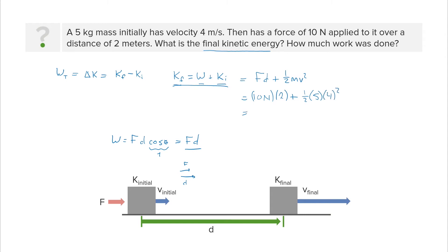So this equals 20 plus 4 squared is 16, half of that is 8, so 8 times 5 is 40. So this equals 60.